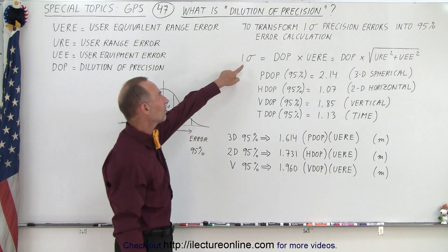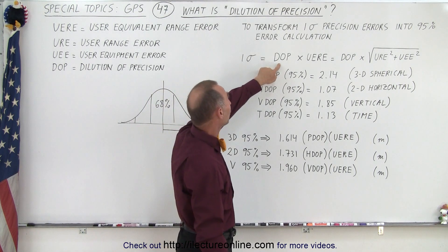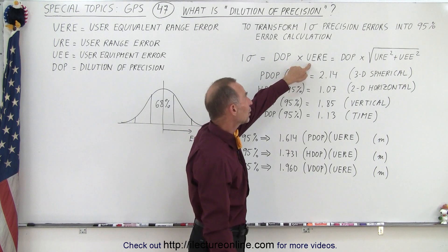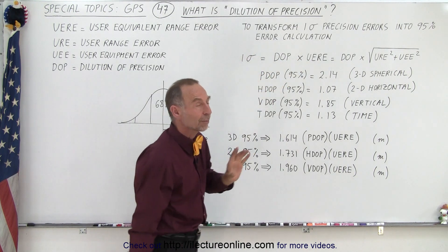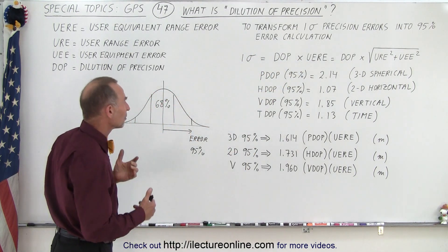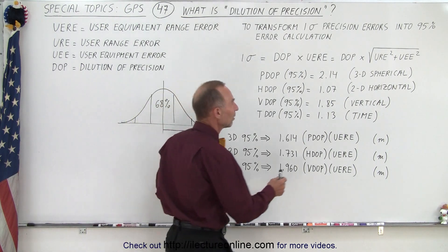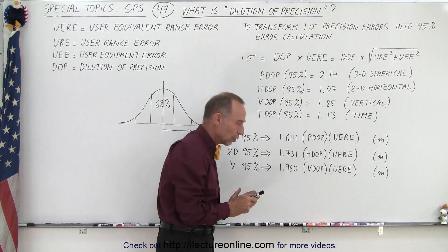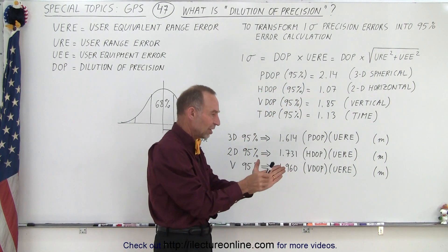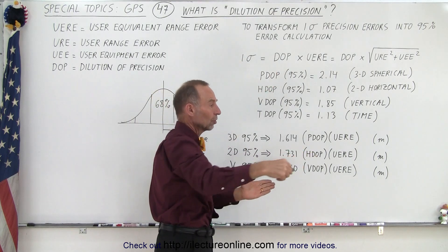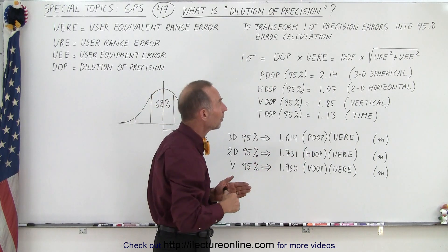So to get the one sigma figure, we multiply something called the DOP, which is what we call dilution of precision, with the UERE to get that one sigma value. Now, the DOP values will depend upon what measurement we're taking. If we're in the 3D spherical measurement, so if we go from our receiver out in any direction, three dimensions, so north, east, and up, for example,